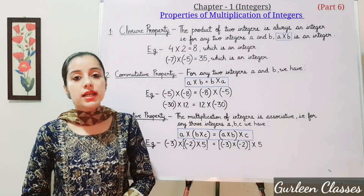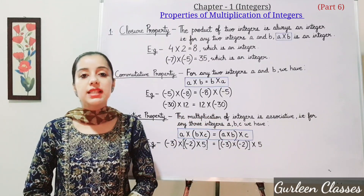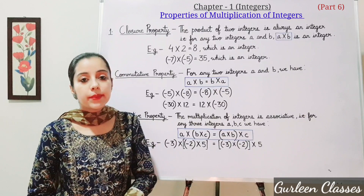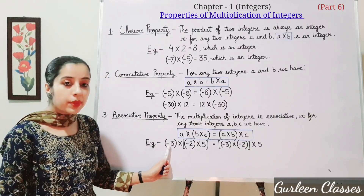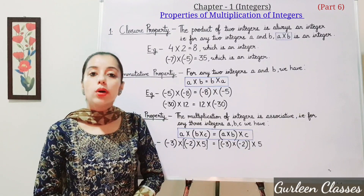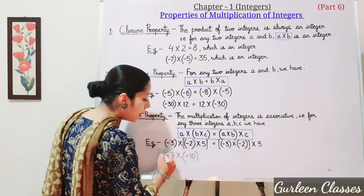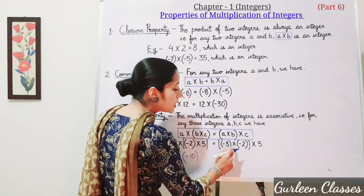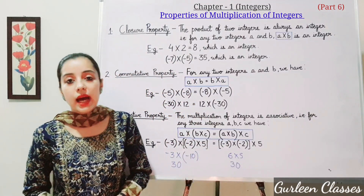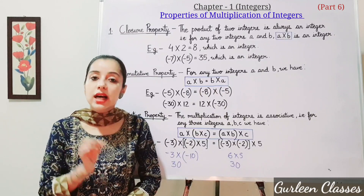Property number 3: associative property of multiplication. The multiplication of integers is associative. That is, for any three integers a, b, c, we have a into (b into c) is equal to (a into b) into c. Example: minus 3 into minus 2 into 5 equals minus 10, then minus minus gives plus, so it is 30. Right side: minus 3 into minus 2 is 6, into 5 is 30. LHS equals RHS. If you change their grouping, results remain the same.